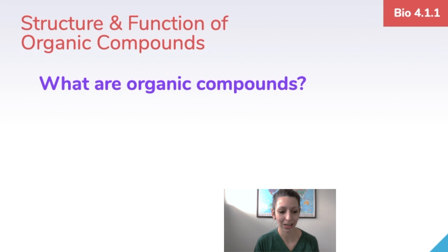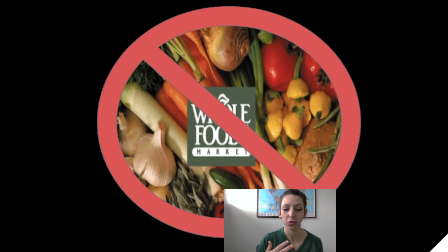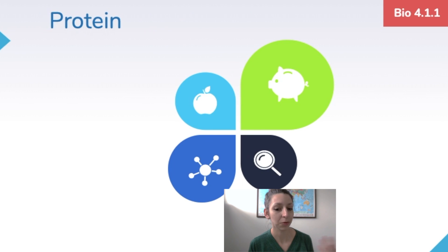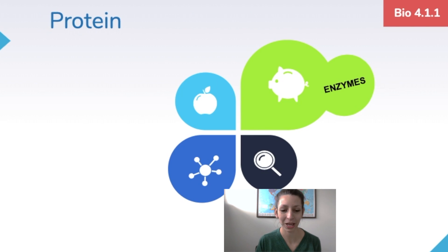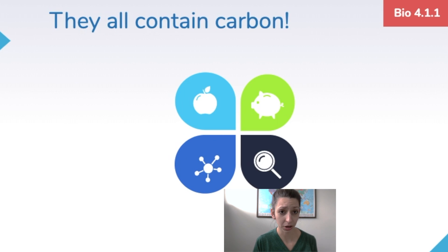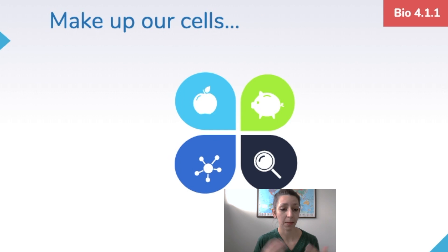First, 4.1.1 — what are organic compounds? These are also called biological molecules. Organic in this case means containing carbon, not like organic you'd see at a grocery store. These are four categories of molecules that are essential to all cells: carbohydrates, proteins (which include enzymes), lipids, and nucleic acids. They all contain carbon, and they all make up our cells and perform essential functions for living things.